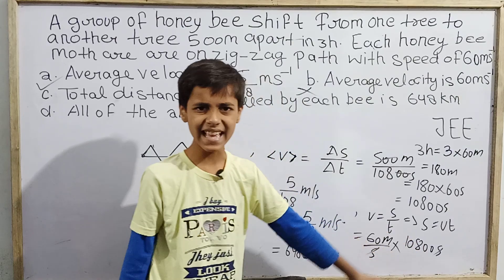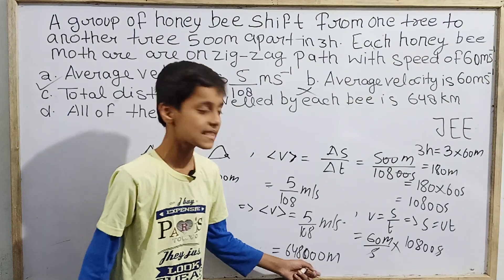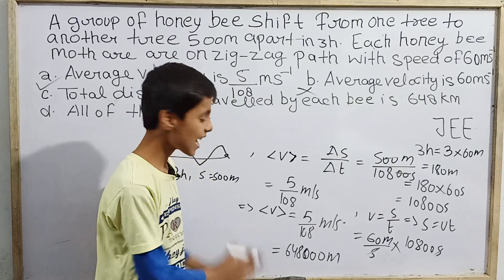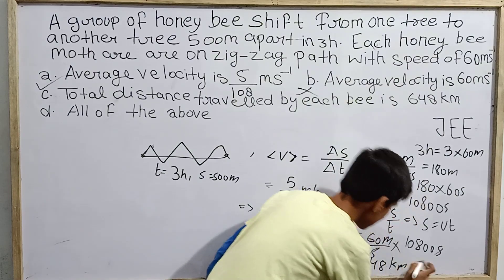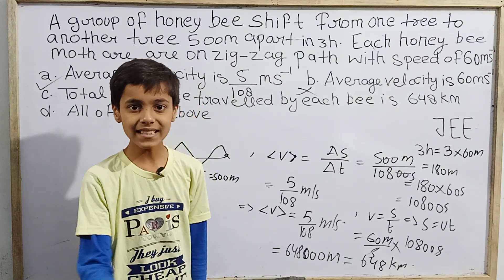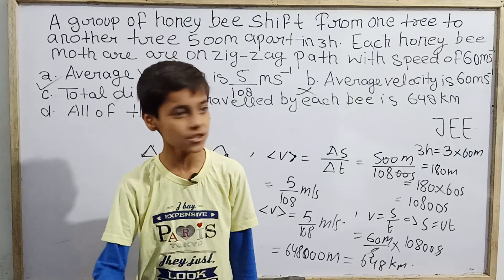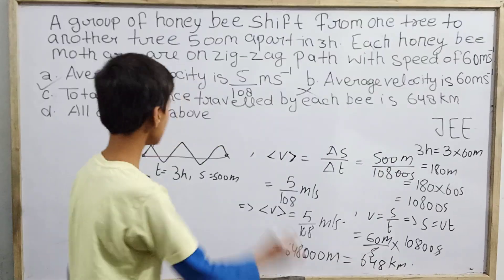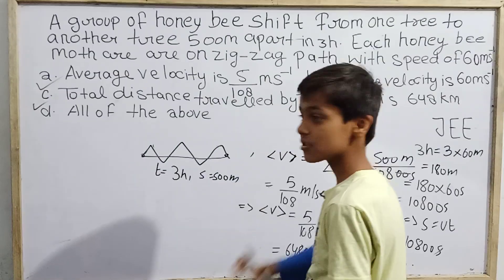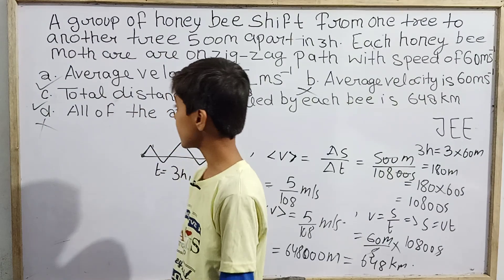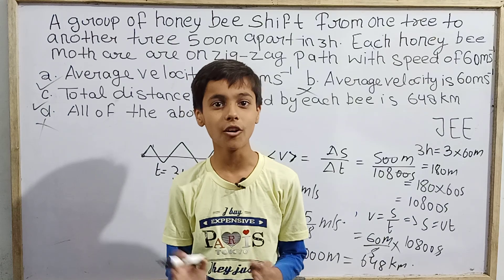Calculating: 60 × 10,800 = 648,000 meters. Converting to kilometers: 648,000 meters = 648 kilometers. This matches option C exactly, so option C is correct. Since option B is wrong, option D (all of the above) is also wrong. Therefore, the correct answers are option A and option C. That was today's kinematics question for JEE — thank you!